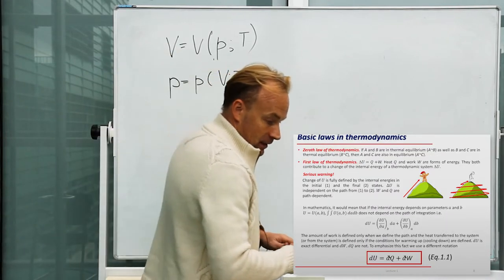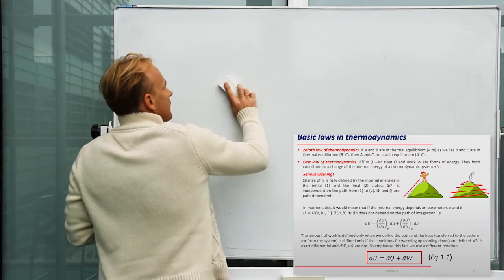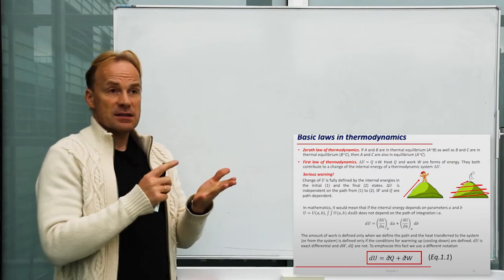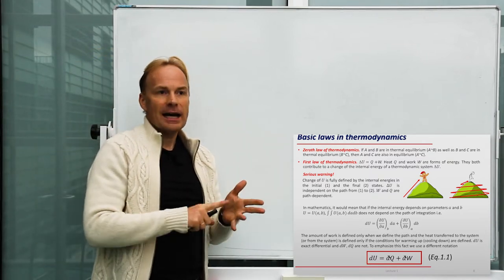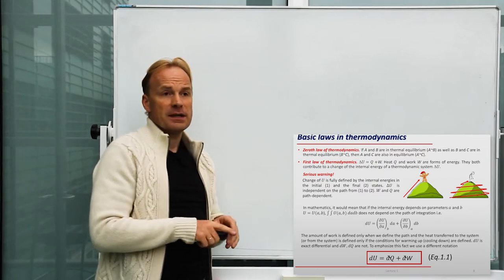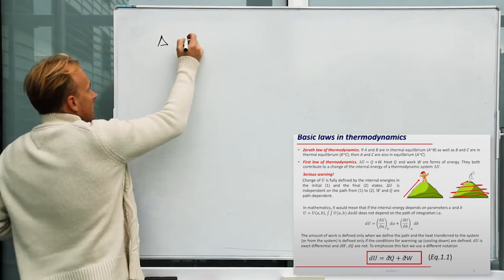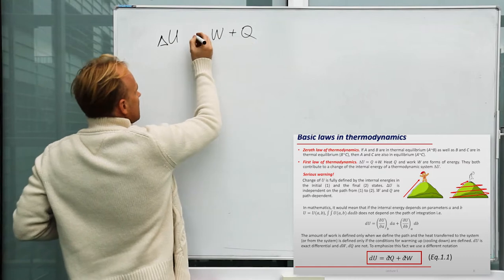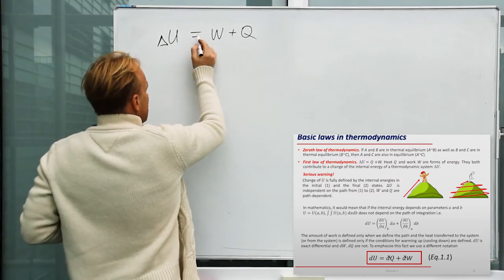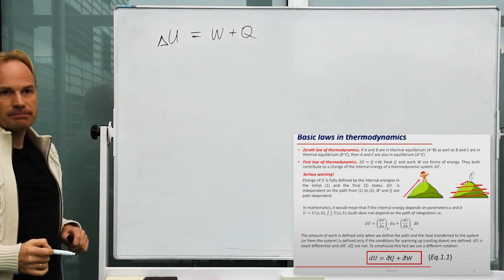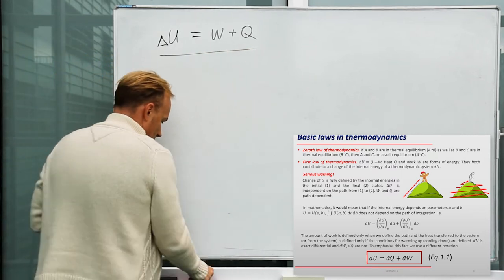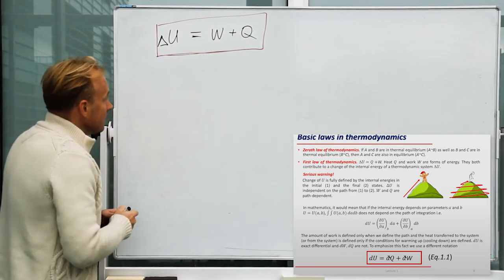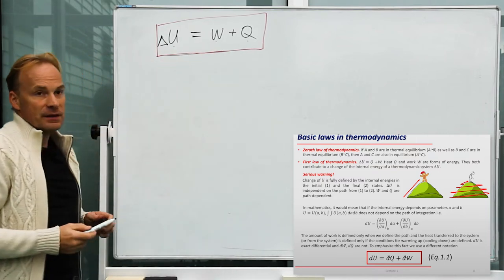Then basic laws. You already had, in the course of Warmthelayer, the basic laws of thermodynamics: the zeroth law and the first law of thermodynamics. I explicitly want to pay attention to the first law of thermodynamics, which is just conservation of energy. You can perform work on the system, you can transfer heat to the system, and both work and heat are forms of energy. These forms of energy will be used to change the internal energy of the system. In this course, I would like to pay special attention to the fact that these quantities have different properties in thermodynamics.